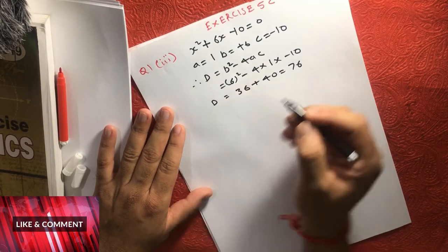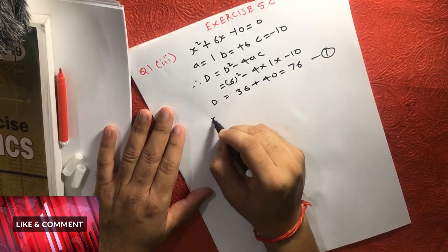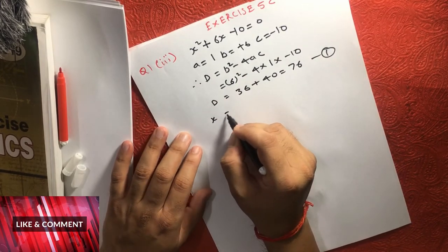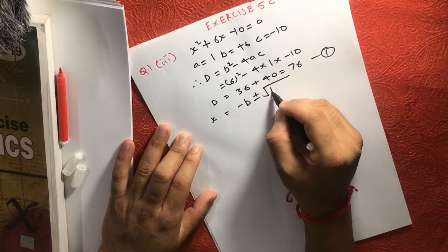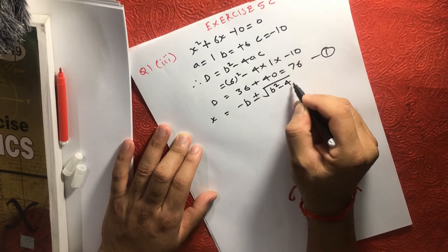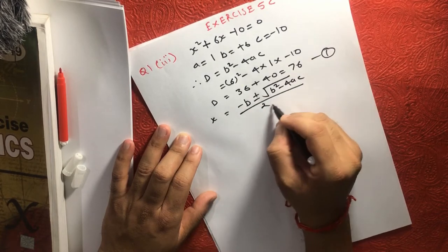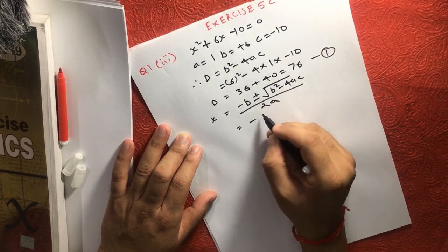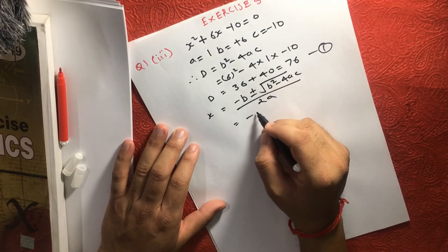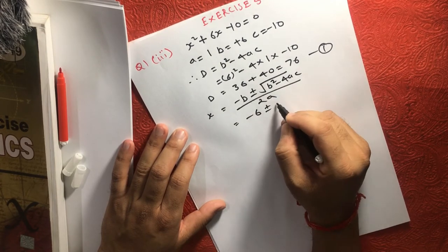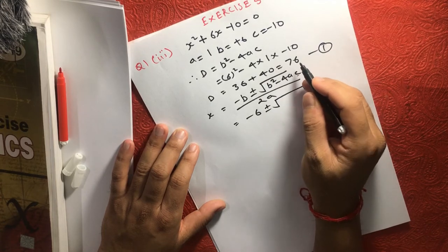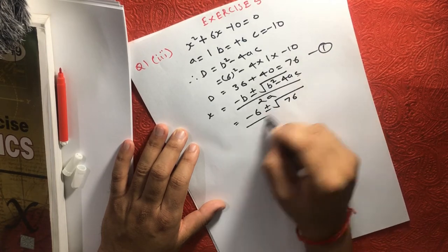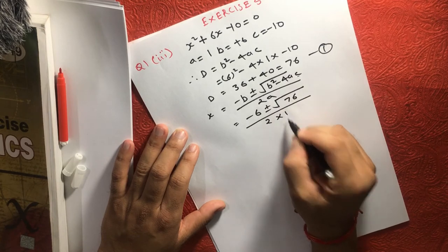So this is one of the equations. Now we have the equation: x is equal to minus b plus minus square root of b² minus 4ac over 2a. Now here, b is 6, so we have minus 6 plus minus square root of 76, because b² minus 4ac is 76, over 2 into 1.